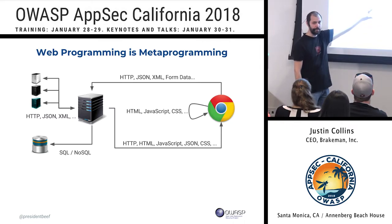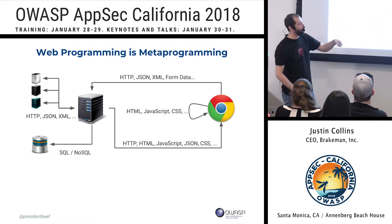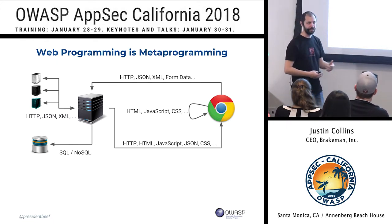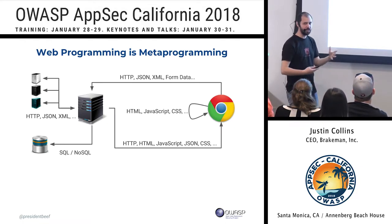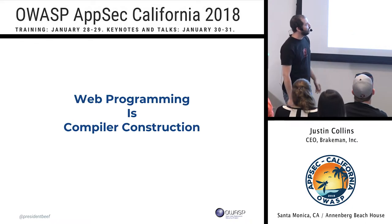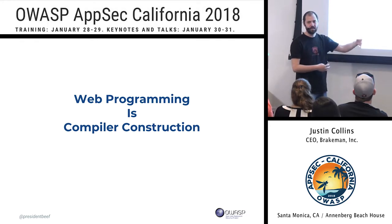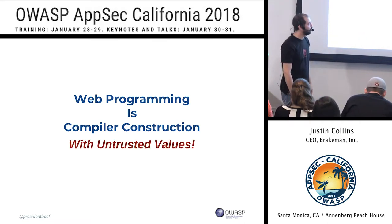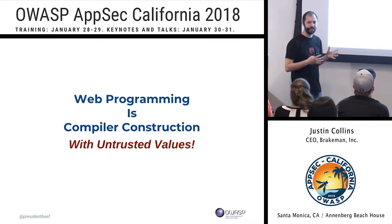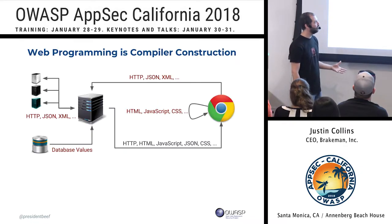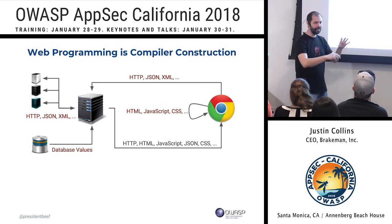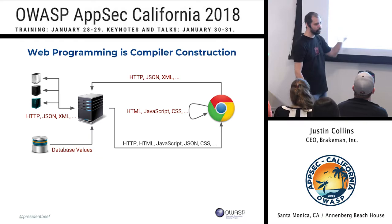There's also the web server itself, networking devices, and the browser — in which JavaScript may generate HTML and CSS, and even generate other JavaScript that it then interprets. There's a lot of code generation happening. Web programming is really compiler construction: we're building a compiler that takes in inputs and generates code to be interpreted and evaluated. Unlike most compilers, however, we're doing it with untrusted values coming in, which makes it even harder.